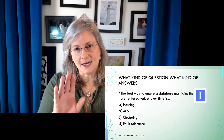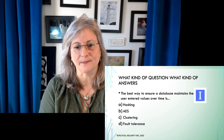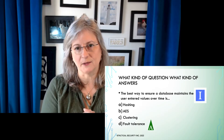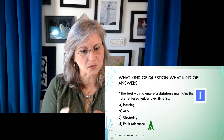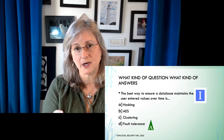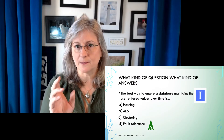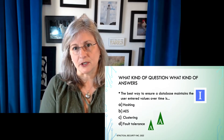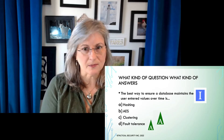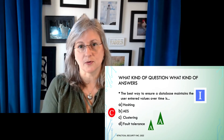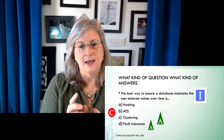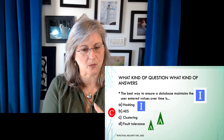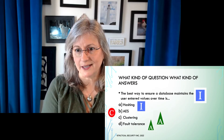I like to work from D up — it's a way to trick your brain into actually paying attention. D: fault tolerance — that's making sure something is available if there's a failure, so that's an availability answer. C: clustering — two servers working together so if one fails the other continues; also availability. B: AES — that's encryption, a symmetric encryption algorithm that protects confidentiality of data; that's a confidentiality answer. A: hashing — that is an integrity check. Integrity checks include hashing algorithms like MD5, SHA-1, SHA-2, SHA-3.